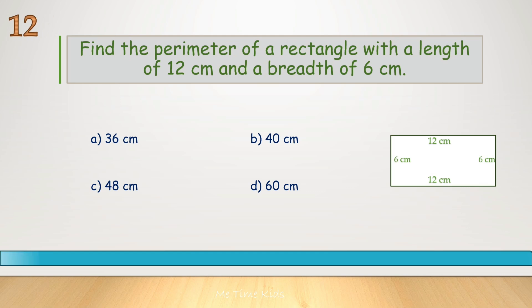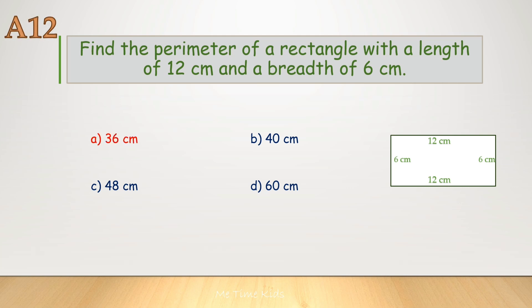Find the perimeter of a rectangle with a length of 12 centimeters and a breadth of 6 centimeters. Correct answer is A, 36 centimeters.